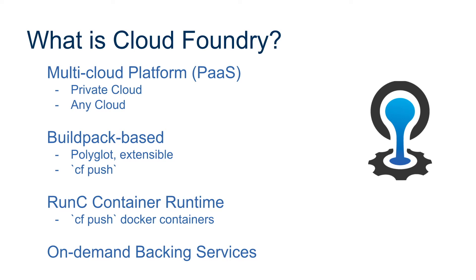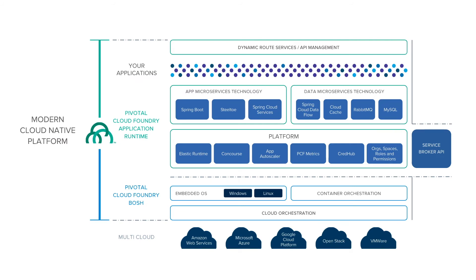It integrates with on-demand backing services. In terms of functionality, it offers a lot of the same and maybe even more functionality than the cool things we saw with Kubernetes, Istio, and the Open Service Broker architecture. Here's a brief architecture slide — you can see it runs on a variety of clouds at the bottom, then there's an infrastructure orchestration layer called BOSH, and then the actual Cloud Foundry runtime, where we have some microservices orchestration technologies.